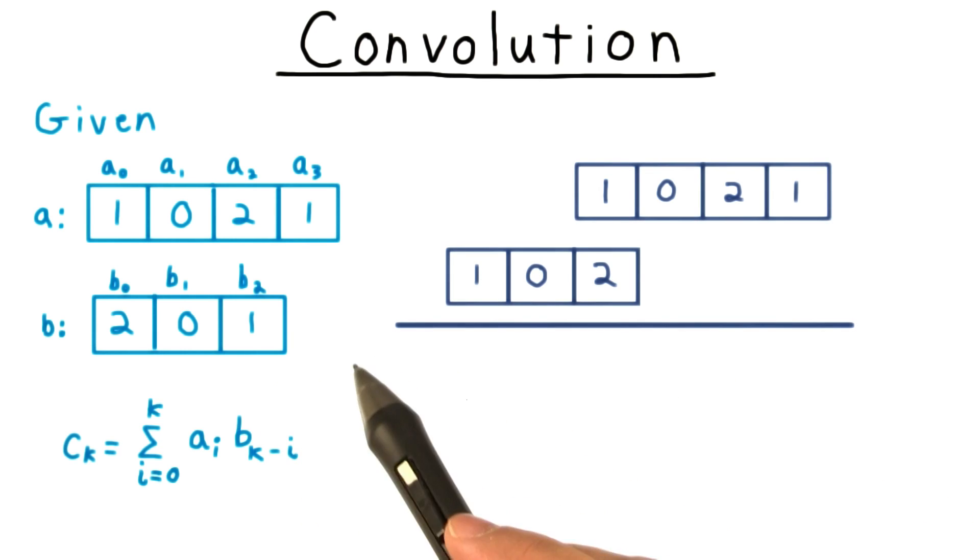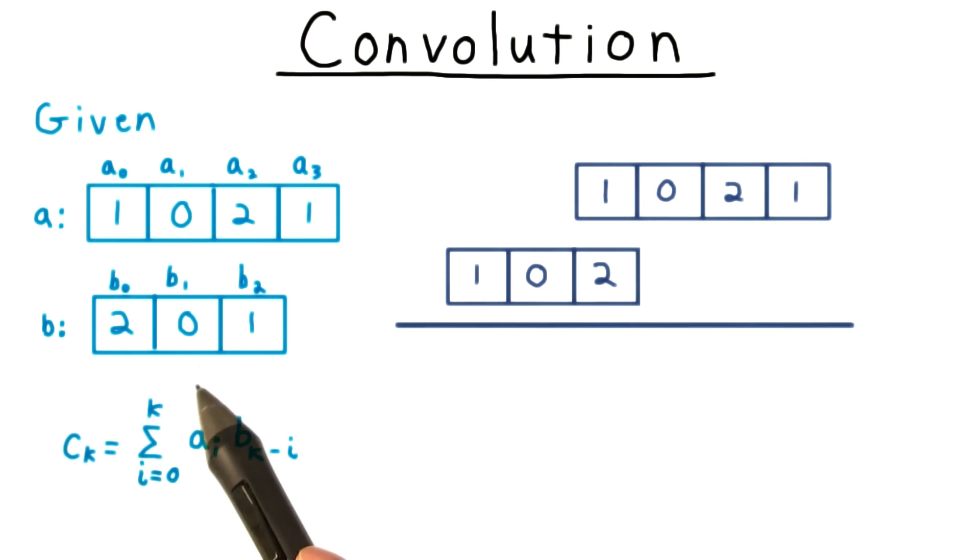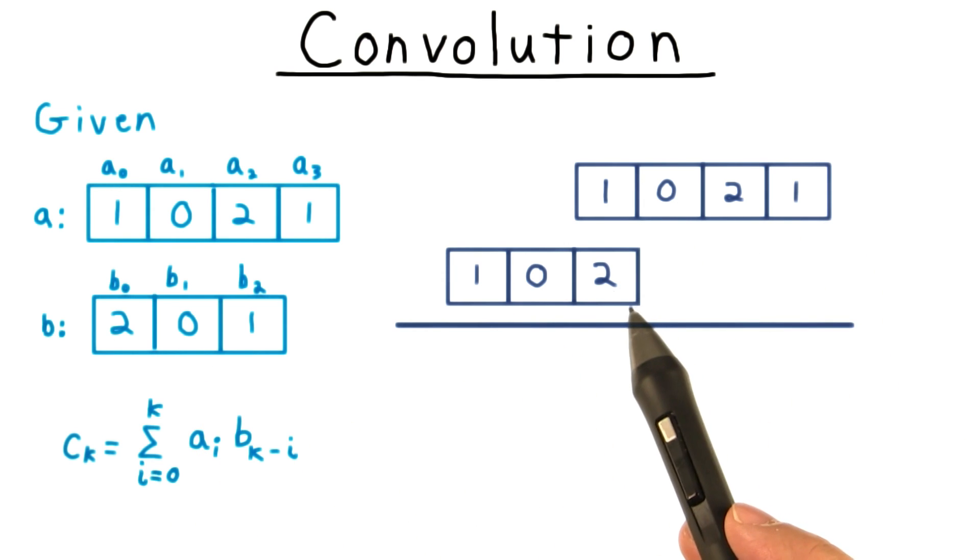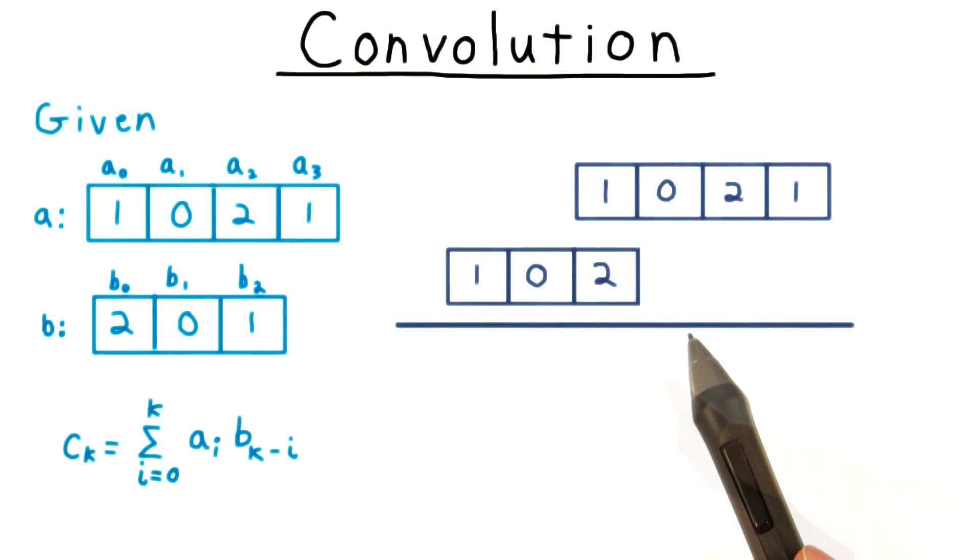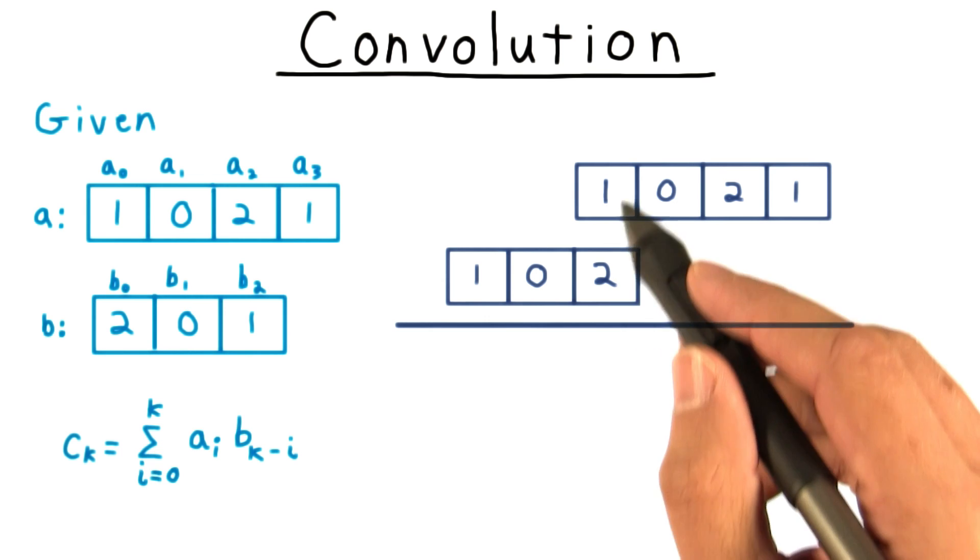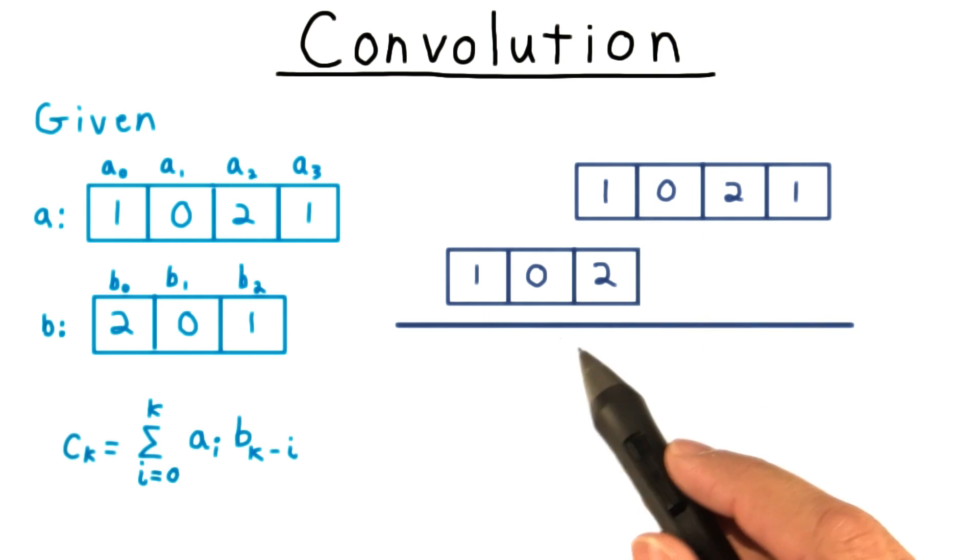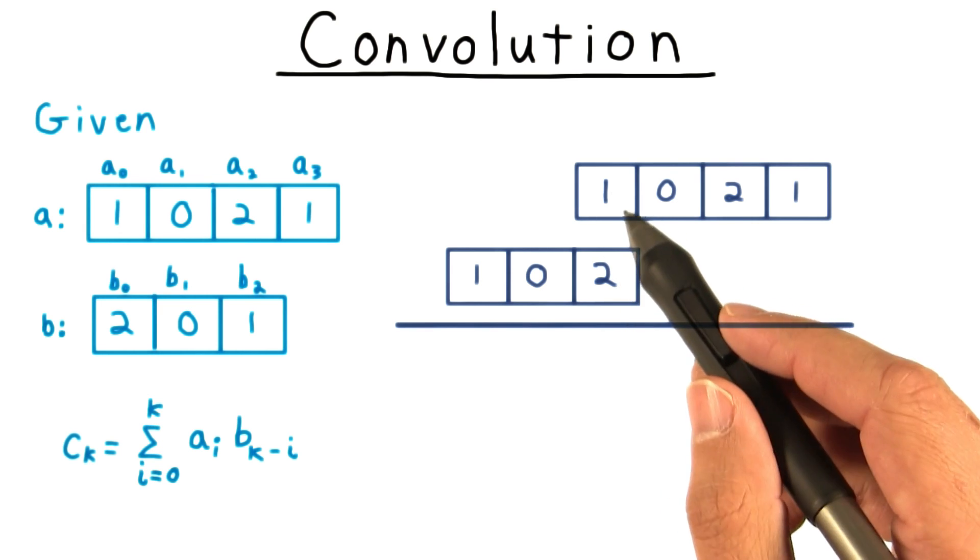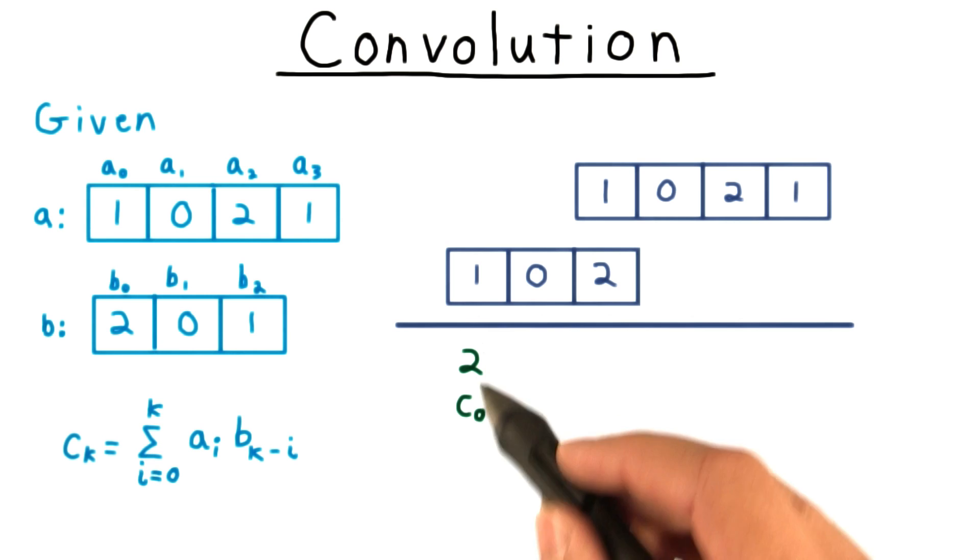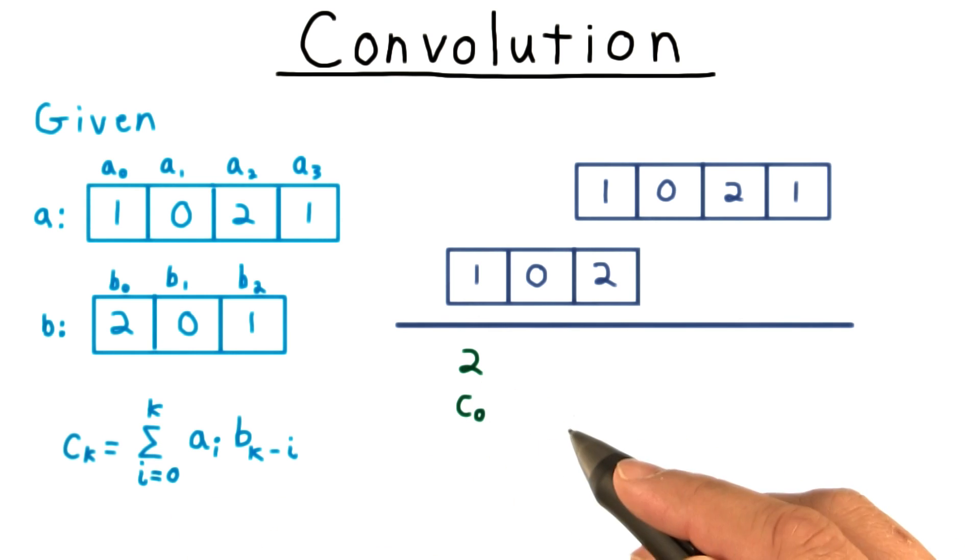We can visualize convolution by reversing the order of b and lining it up with a so that the 0th element of b is under the kth element of a. This is the alignment for k equals 0. Then we multiply all elements that overlap and add up these products. For k equals 0, this is 2 times 1, which is 2. So we'll write down that c0 is equal to 2.